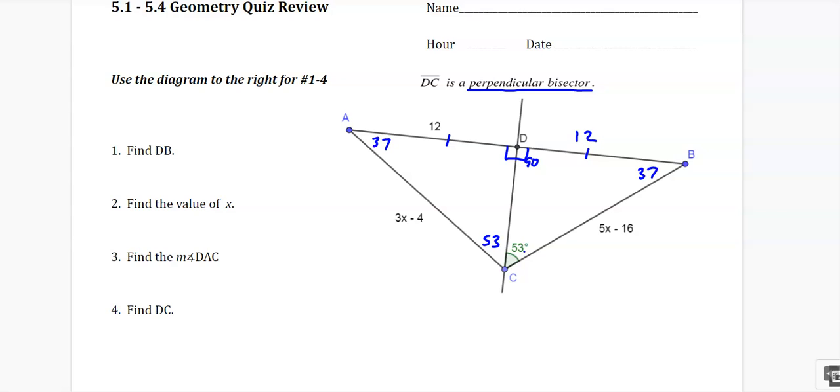So let's see what we can answer. DB is 12. The value of x, I know that this side equals this side because of the perpendicular bisector theorem. So 3x minus 4 has to equal 5x minus 16. Subtract the 3x, add the 16. Looks like x equals 6.